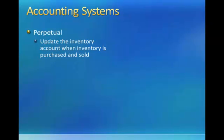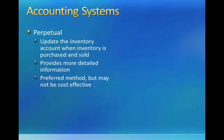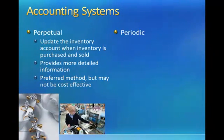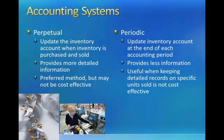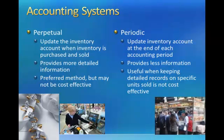Finally, we want to look at our accounting systems. We'll start by reviewing Perpetual. Under the Perpetual system, we update the inventory account when inventory is purchased and sold. It provides more detailed information, and it's preferred but may not be cost effective. Now we want to look at Periodic. Periodic only updates the inventory account at the end of each accounting period. It provides less information, but it's useful when keeping detailed records on specific units sold is not cost effective.